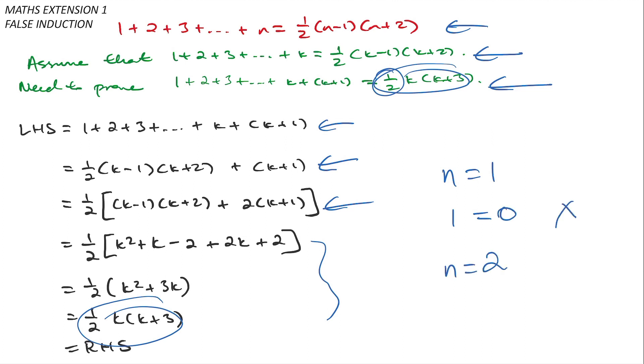I can then sub in n equals 2, and on the left I'll now get 1 plus 2 which is 3, and then on the right I'll get a half times 2 minus 1 times 2 plus 2 which is hopefully equal to 2, but that's obviously still not true.